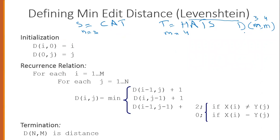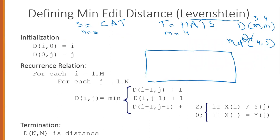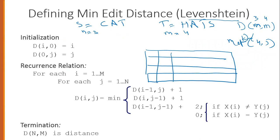So let's build that matrix. It will have 5 columns. Next, we proceed to initialization. In initialization, d[i,0] is equal to i.